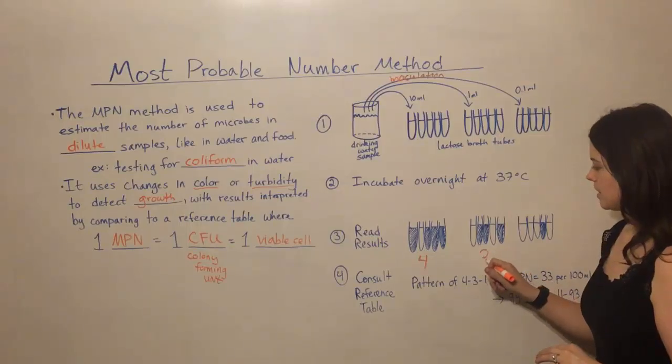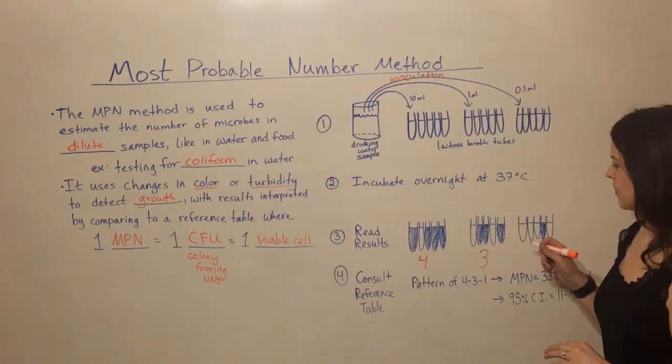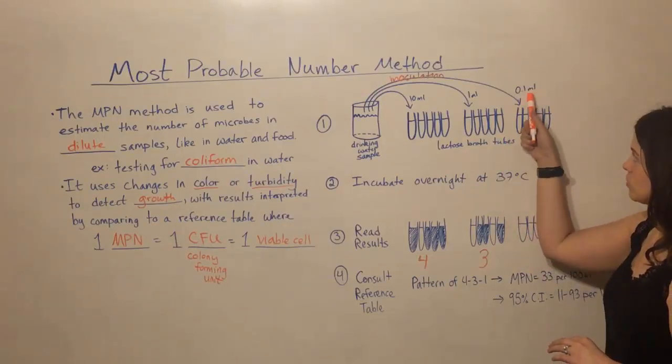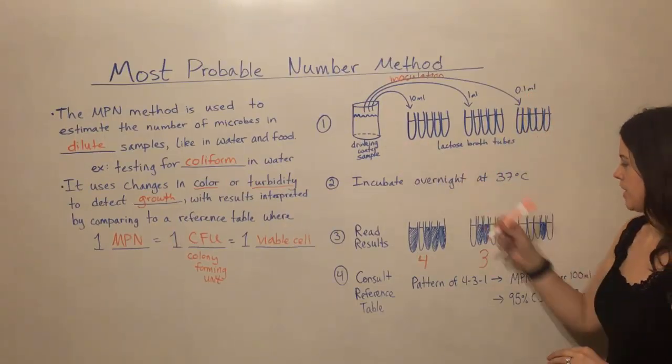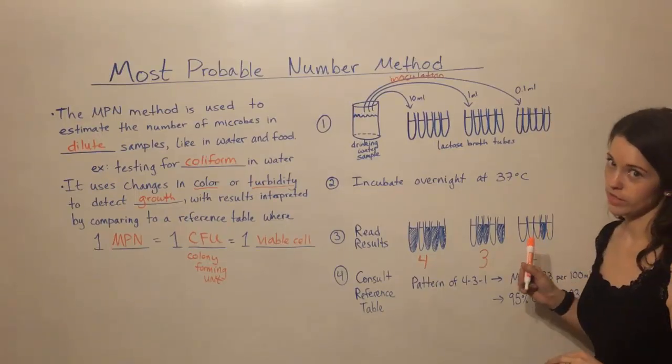We have three positive tubes here. Three showed a color change. Two did not. And then where we were adding the smallest amount of the water sample, we just got one positive tube. So one changed color and four did not.